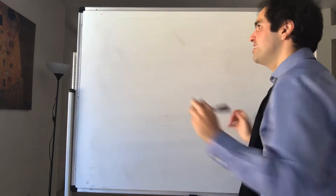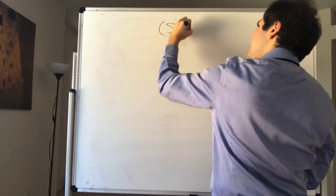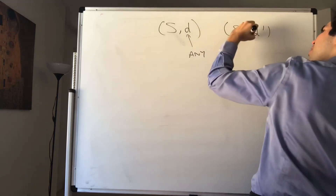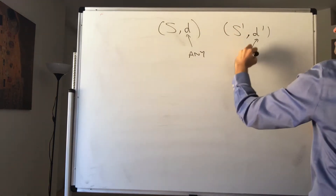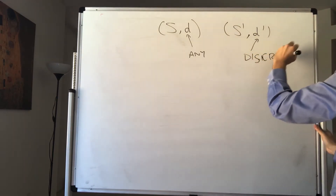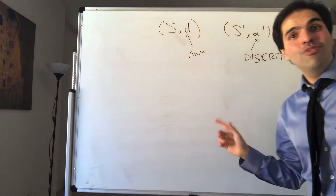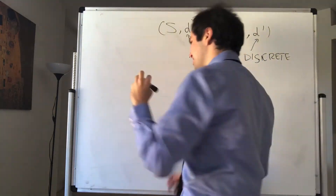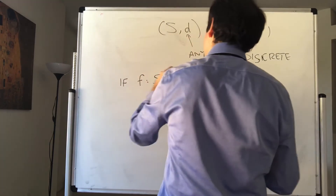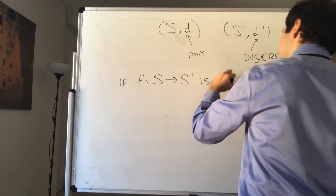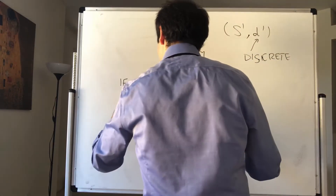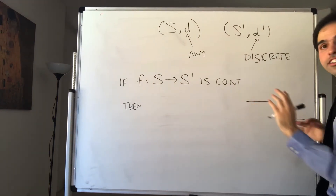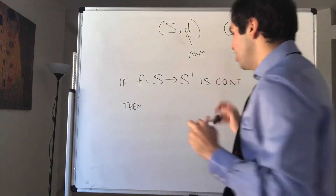On the other hand, what about the opposite scenario? What if (S, d) is any metric space and (S', d') is a metric space with the discrete metric? Then I want to show that continuous functions must be locally constant — not necessarily globally constant, since you could have two pieces where f is constant on each piece.